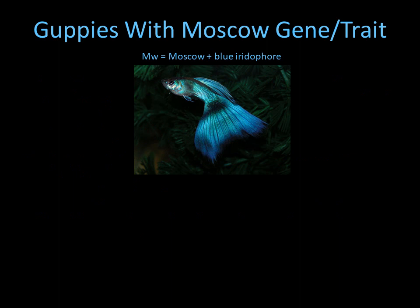Here's an example of a fish that has some Moscow trait. As you can see, he has some Moscow trait plus blue iridophores, so it gives this cover of blue iridescence throughout the whole body.